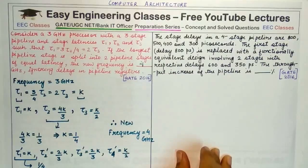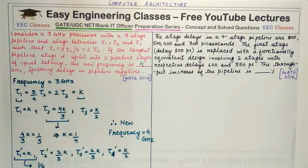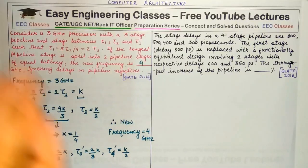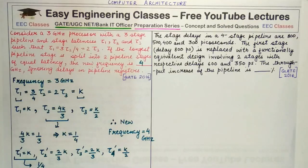So this is a simple question. You need to know how pipelines actually work, what are latencies and what is the frequency, the relation between frequency and latencies, and how to get the values out of such questions. Now coming to the second question.